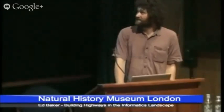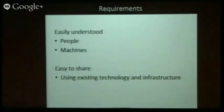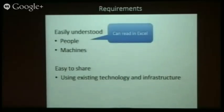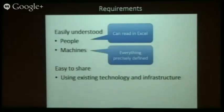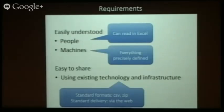On top of that, it really needs to be understood — the data needs to be easily understood by people, which basically means: can I read it in Excel if I want? And also by machines, which means every field, every column, everywhere has to be quite precisely defined, and easy to share using existing technologies — easy infrastructure, comma-separated files, zip files, delivered over the internet or the web.